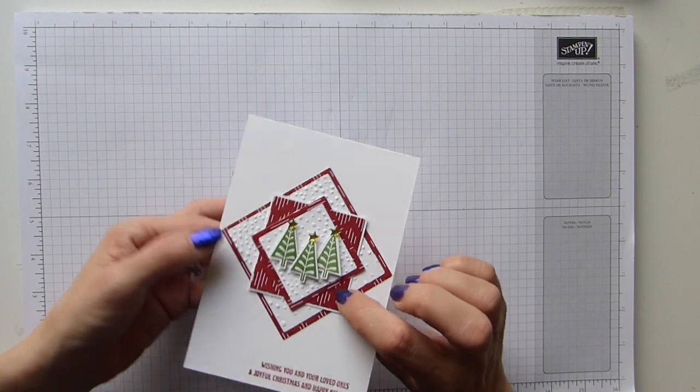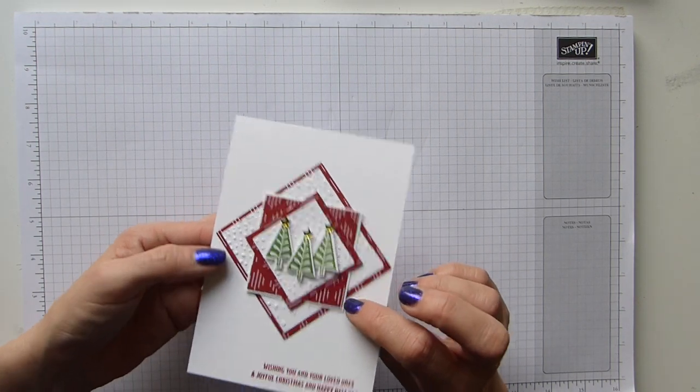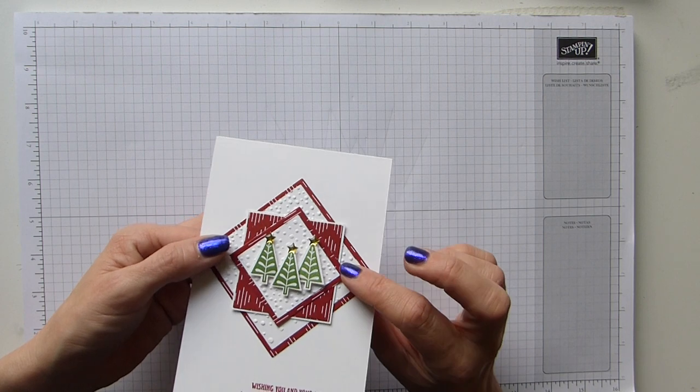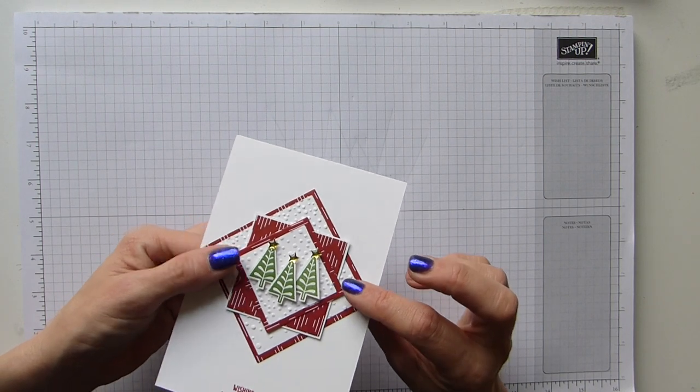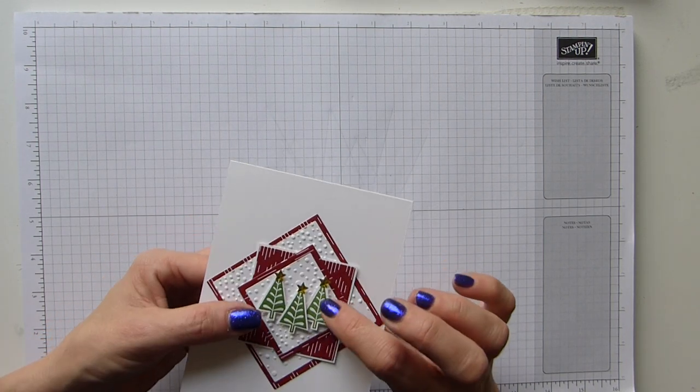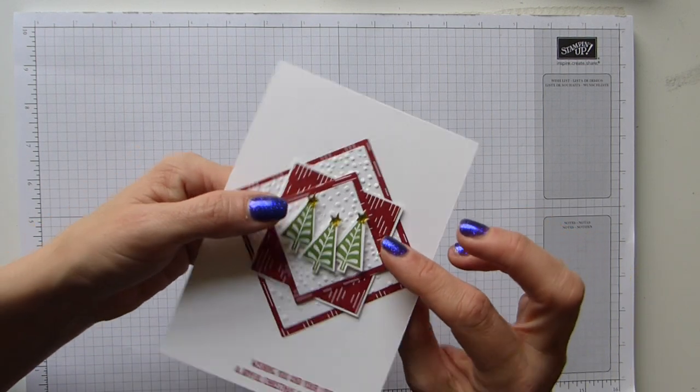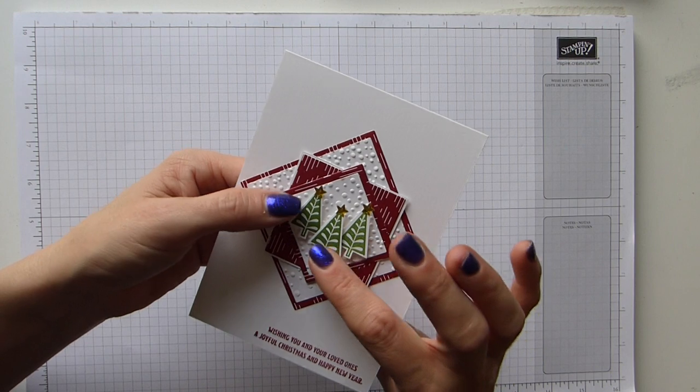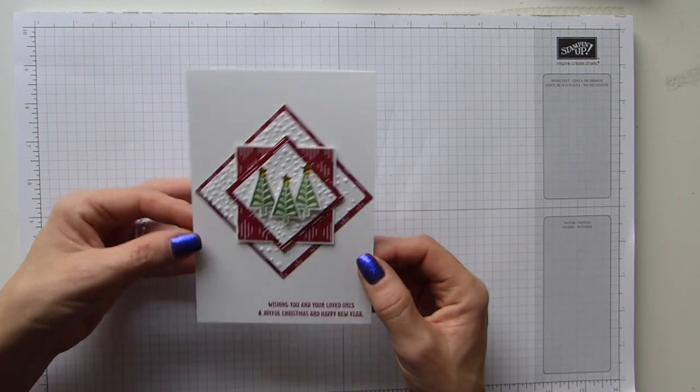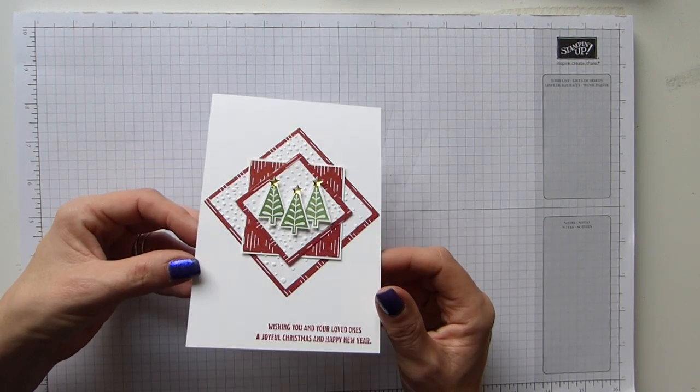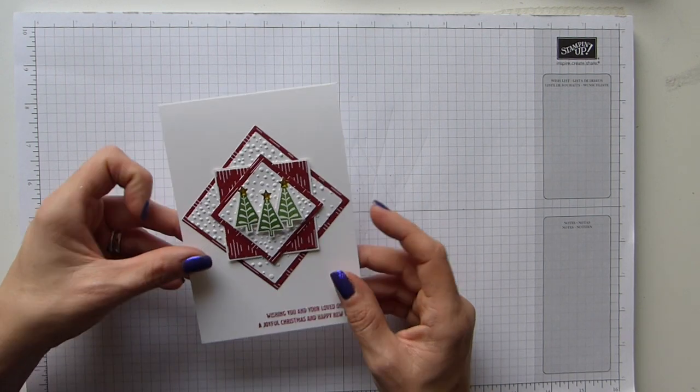Really just some DSP, an embossing folder which obviously you will need your big shot or some form of embossing machine, and then just some little metallic enamel shapes and then just a little bit of stamping and fussy cutting. And I actually think this is quite a nice card and just a little bit different, so I'm going to show you how I made it.